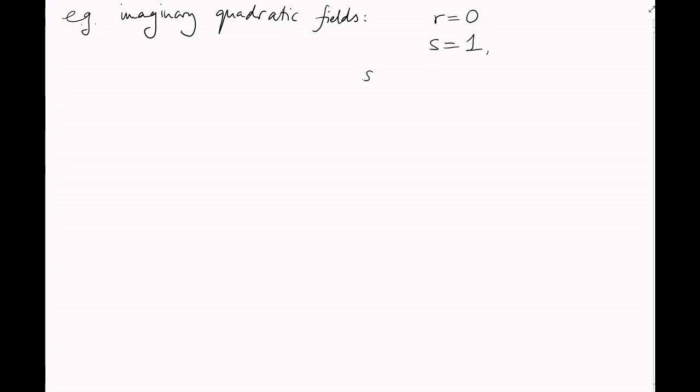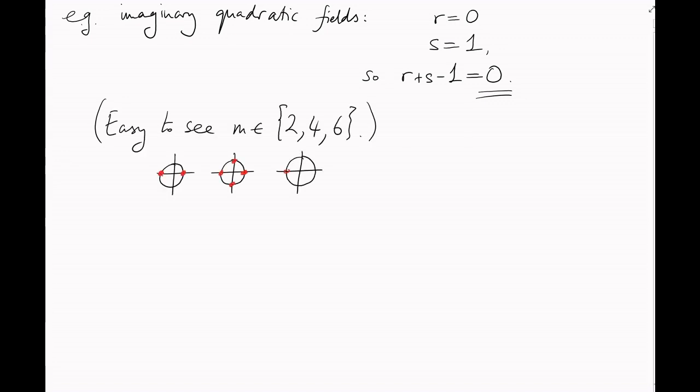For example, we've seen already that imaginary quadratic fields only have finitely many units. And now we can see why. They have no real embeddings. They have one pair of complex conjugate imaginary embeddings, and so this free abelian part of their unit group has rank 0. It's easy to show that there are two, four, or six roots of unity here, as mentioned previously.